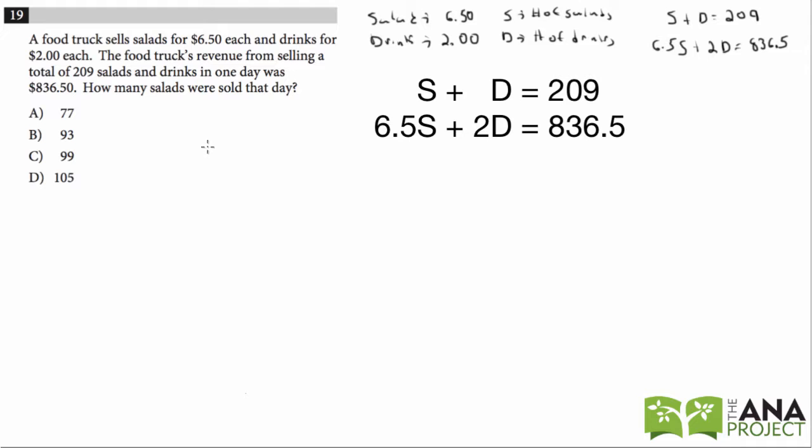So one way to do this is actually to use the answer choices and work backwards. It says how many salads were sold that day. So these are the choices for salads: 77 salads, 93 salads, 99 salads, 105 salads.